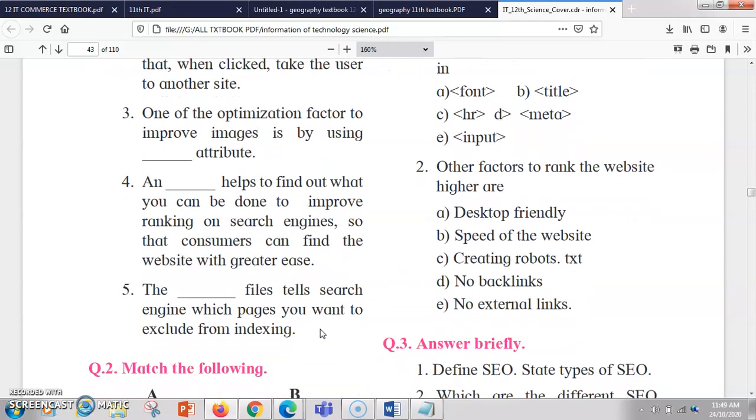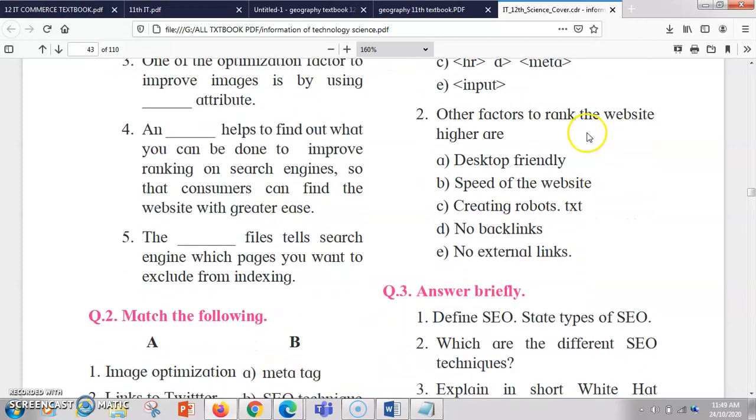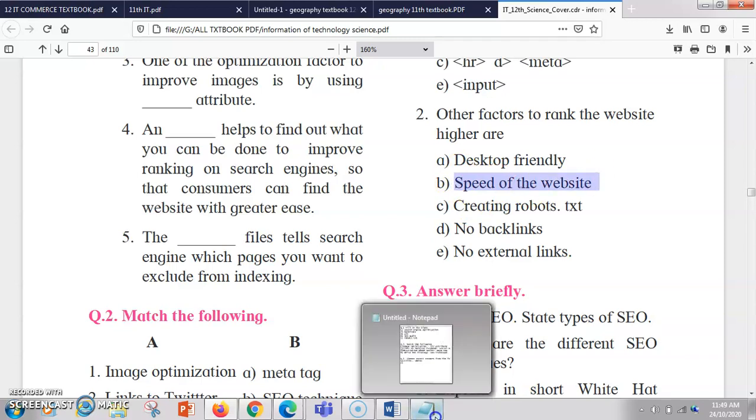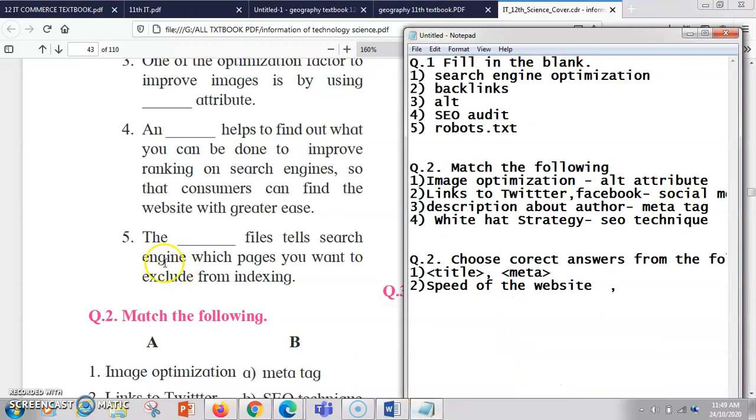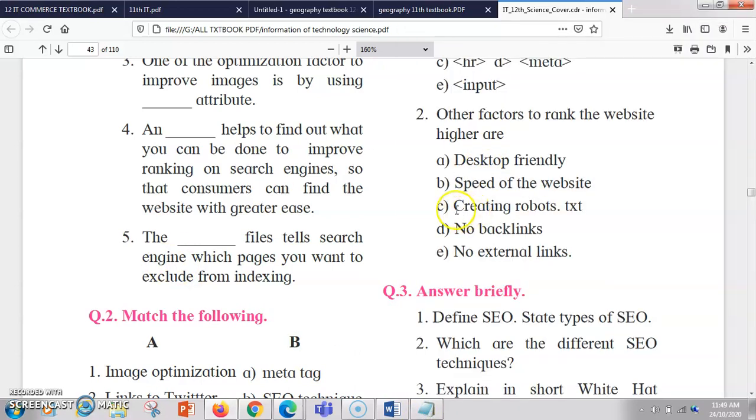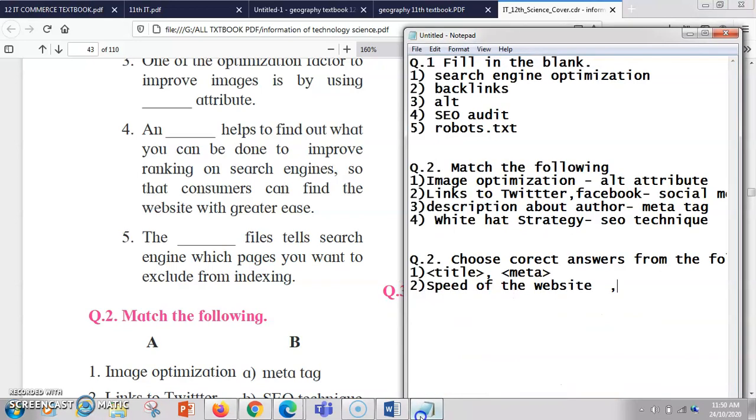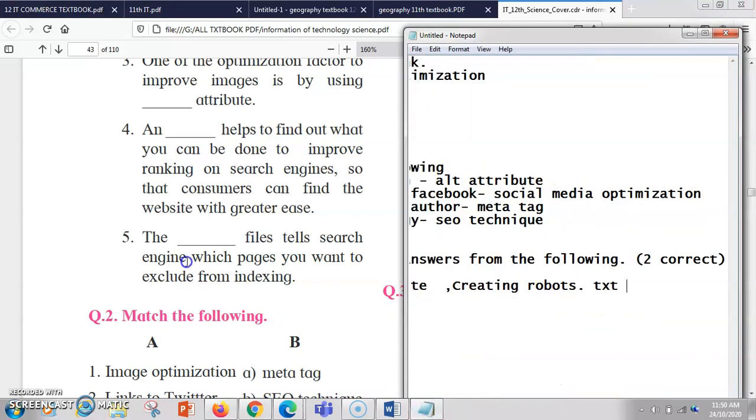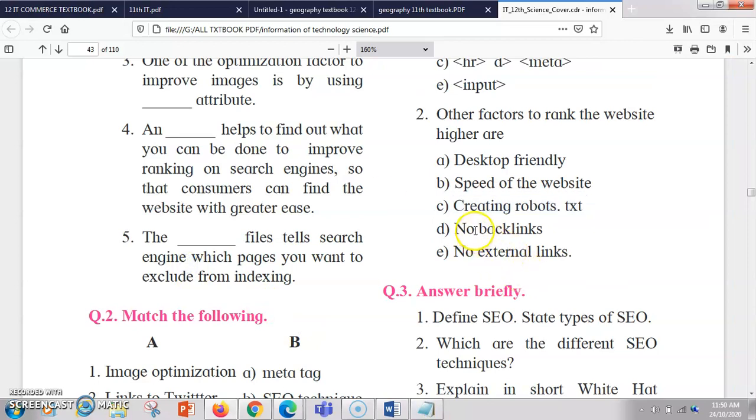Second question for two MCQs correct is: other factors that rank the website higher are. So the options are speed of the website and creating the robots.txt. So even these things are going to affect or play an important role to rank your website. Even the backlink is also important, but here in the option it is written no backlink, no external links, so these cannot be the correct answers.